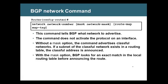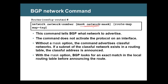To advertise a network in BGP, we need to have the route in the routing table. If you don't have a route in the routing table, the network command configuration will not be effective. The network command subnet mask that you put must also match. If a match is not found, it won't advertise. And if you don't use the mask command, it will consider it as a classful network.